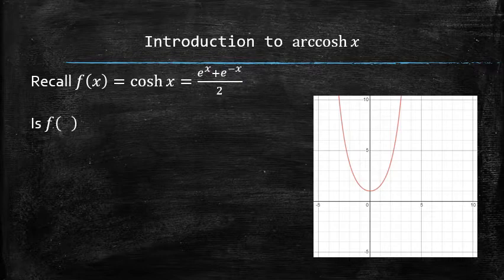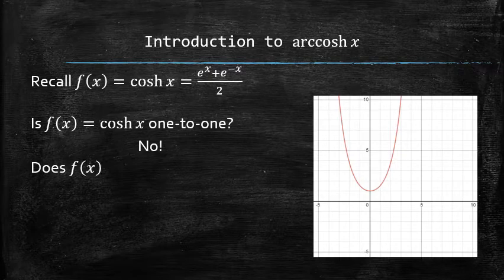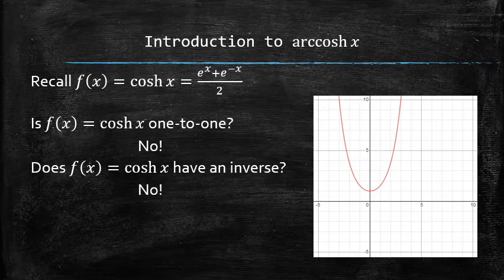Is this function 1 to 1? The answer is no, because it doesn't pass the horizontal line test. Does this function have an inverse? The answer is also no, because only 1 to 1 functions have inverses.